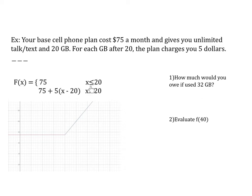$75 if we have 20 or less gigabytes, which is why the domain for that portion is x is less than or equal to 20, represented by the horizontal portion of the graph. At 20, something happens — we start getting charged a different amount. Our new function is the base plan $75 plus $5 for every gigabyte over 20, and this only exists when x is greater than 20.